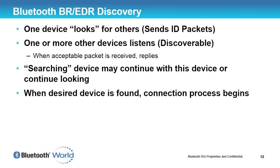In Bluetooth Basic Rate, one device starts looking for other devices — this is called discovery. To do that, it sends out ID packets, which are very short, about 72 microseconds long. One or more discoverable devices listen for these packets, and when they receive one and want to respond, they reply with an FHS packet — a Frequency Hop Synchronization packet — that basically says, 'Hi, I'm a device, my name is Robin.'